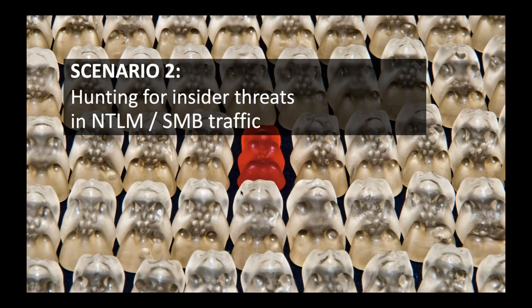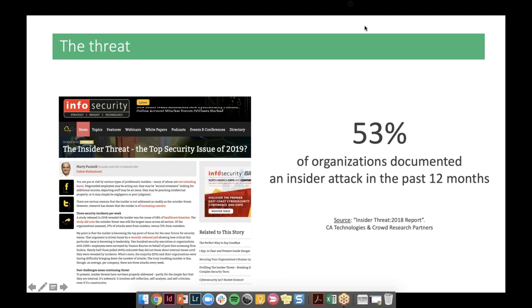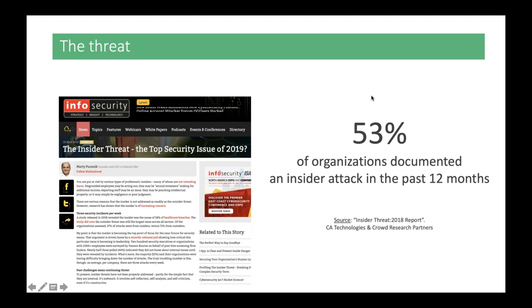Pivoting to the second scenario: we're doing hunting exercises looking for evidence of insider threats in NTLM and SMB traffic - Microsoft protocol traffic. Insider threats, whether malicious insiders - employees going rogue or who have left the company - or outside third parties compromising internal employee credentials, is a huge problem and the cause of many breaches. Trying to find early evidence of this behavior in your organization is a great way to catch it before it does too much damage. A CA Technologies survey found that over 50% of organizations reported an insider attack in the past year.